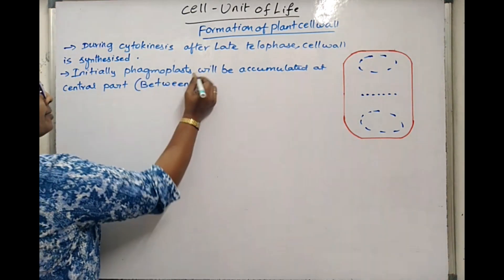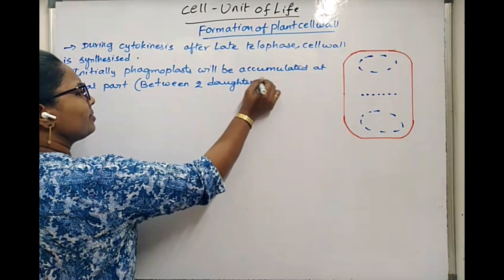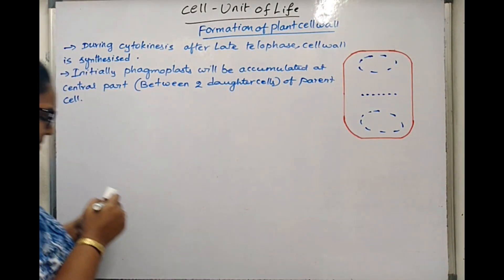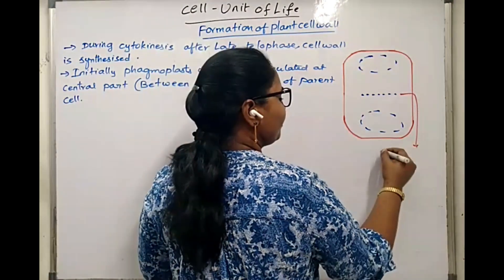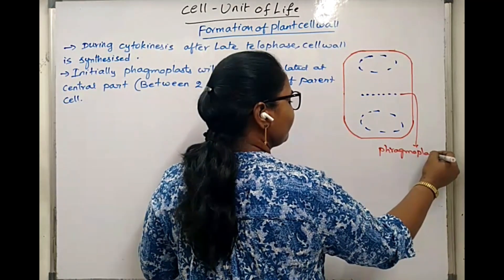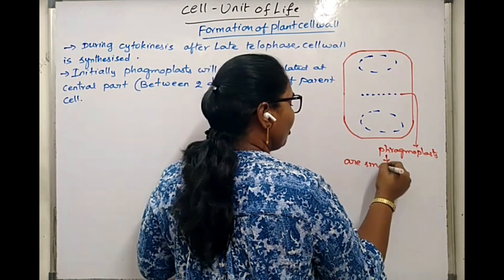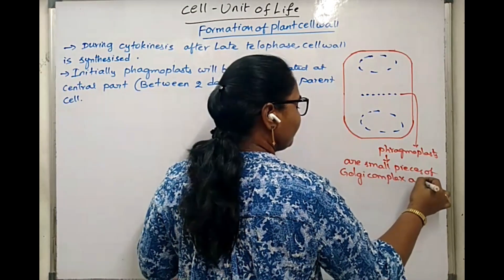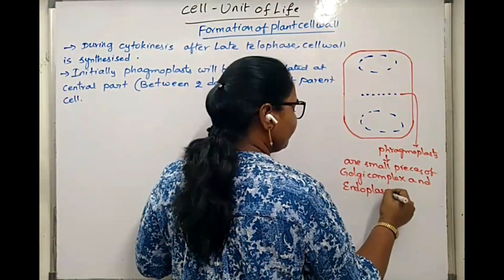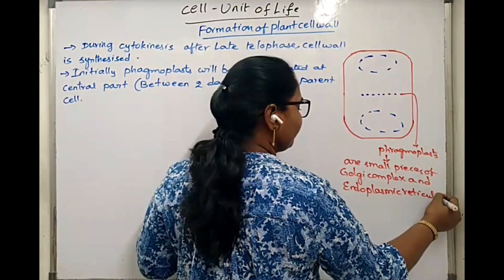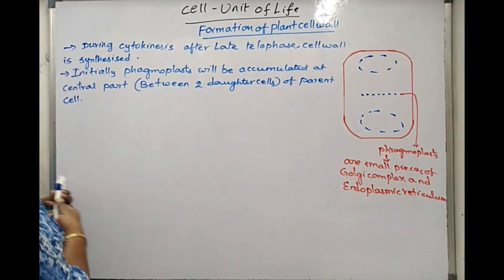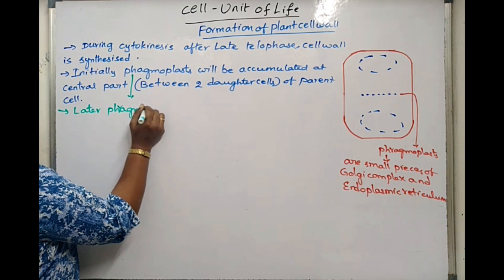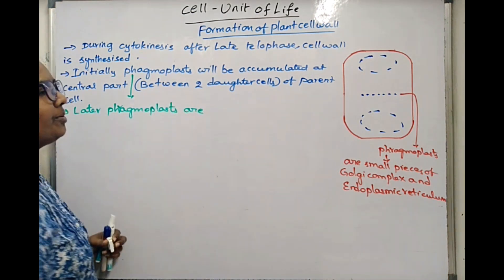That is, between two daughter cells of the parent cell. We can say these are phragmoplasts. Phragmoplasts are small pieces of Golgi complex and endoplasmic reticulum. Later, these phragmoplasts are converted into the cell plate.